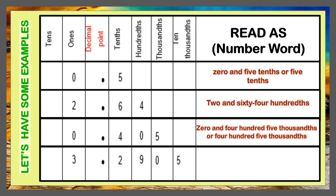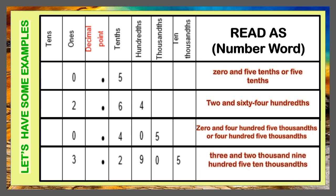The last example has a digit 3 in the 1's place, 2 in the tenths place, 9 in the hundredths place, 0 in the thousandths place, 5 in the ten-thousandths place. So this number reads as 3 and 2,905 ten-thousandths.